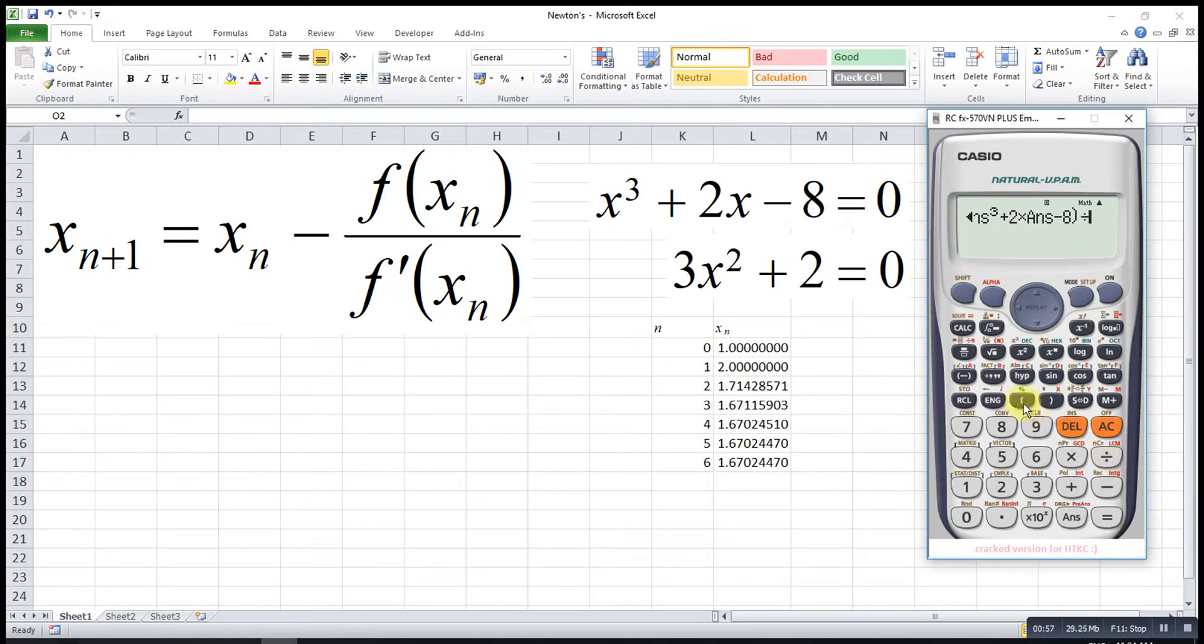Then divide, bracket, 3 times ans square plus 2. Then we press equal.